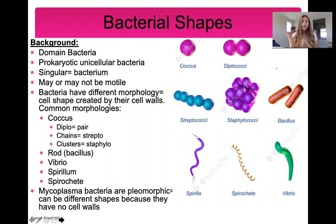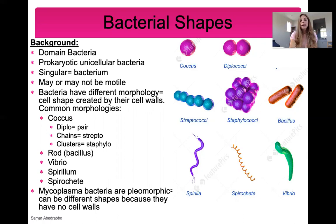Bacteria come in many different shapes, and when we talk about shape we use the word morphology. The two most common shapes are the coccus shape and the bacillus shape. Coccus just means round — perfectly circular bacteria. Rod-shaped bacteria are called rods, also called bacillus. If you see the word bacillus in a bacterium's name, like Bacillus subtilis, they are all rod-shaped.